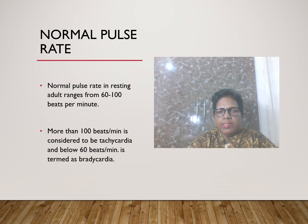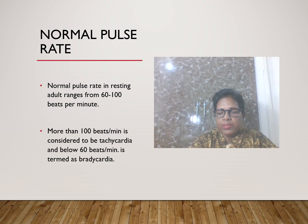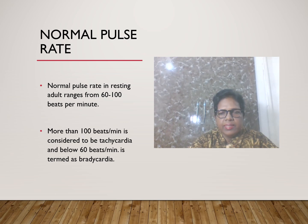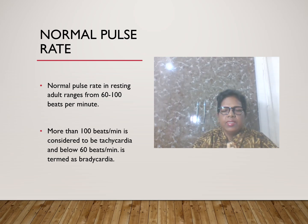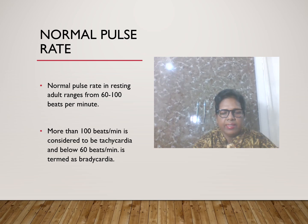The normal pulse rate is 60–100 beats per minute. More than 100 beats per minute is considered tachycardia. Below 60 beats per minute is termed bradycardia.